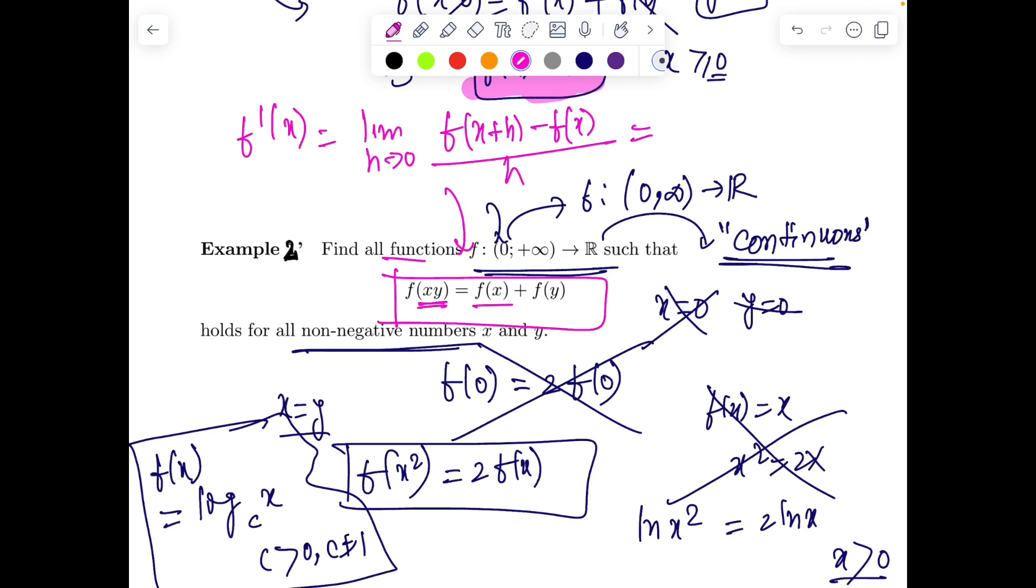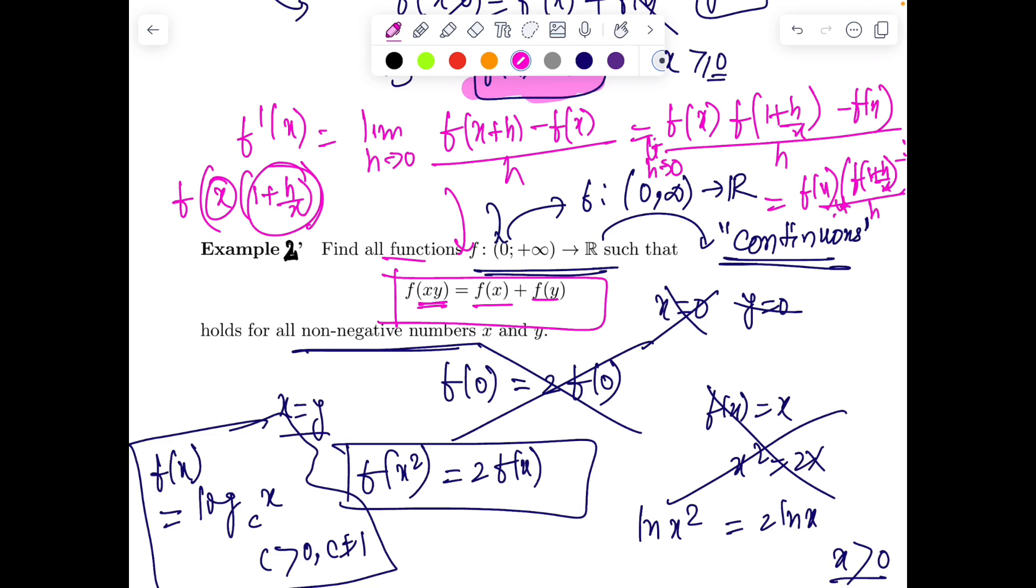I will put the definition. f'(x) = limit h→0 [f(x+h) - f(x)]/h. Now f(x+h) can be written as f(x(1 + h/x)), which equals f(x) + f(1 + h/x). So f'(x) = f(x)·[f(1 + h/x) - 1]/h as h→0. If I divide and multiply by x, this becomes f(x)/x · f'(1).